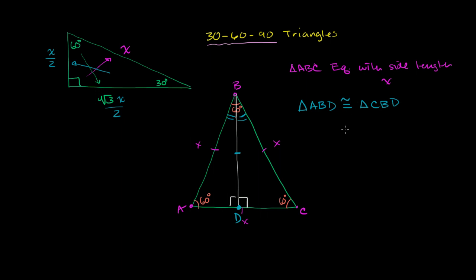We could use angle-side-angle or side-angle-side — whichever we like. What that tells us is that the corresponding sides of these triangles are equal. In particular, the length of AD is going to be equal to CD. Since they're equal and they add up to x — remember this was an equilateral triangle with side length x — we know that AD and CD are each going to be x over 2.